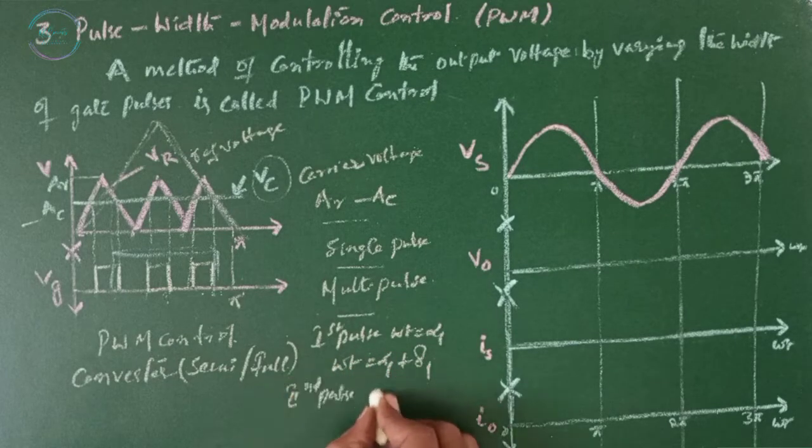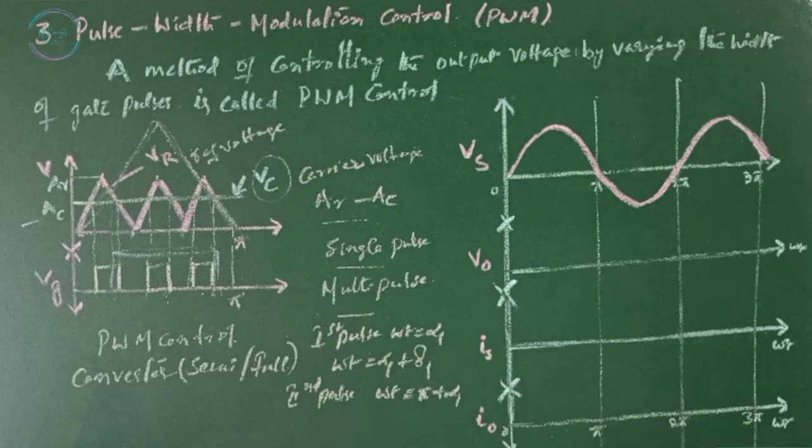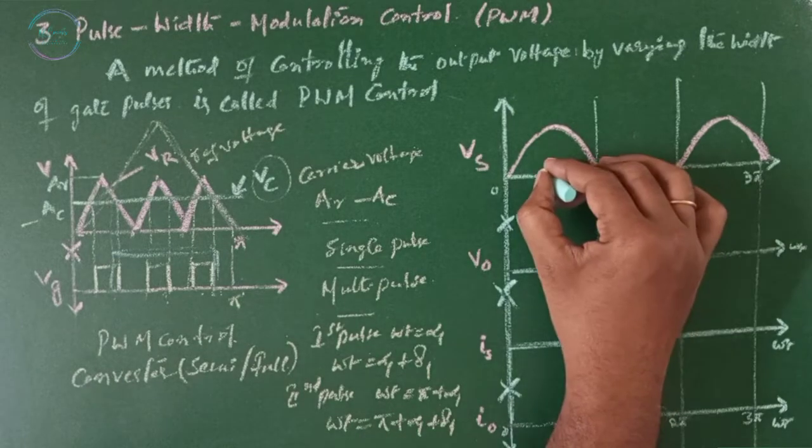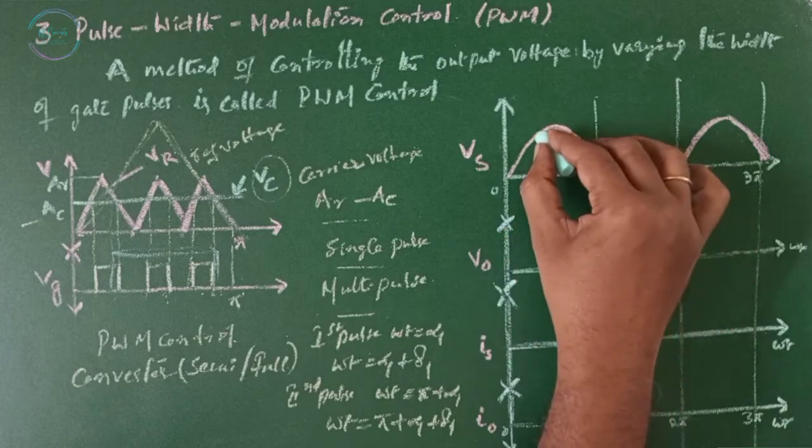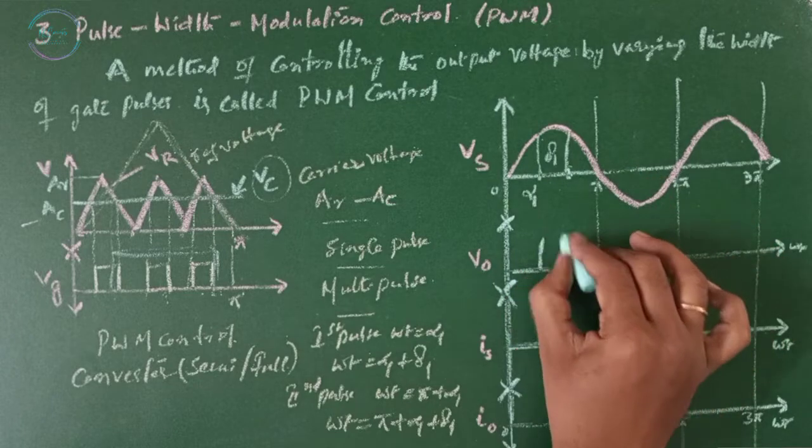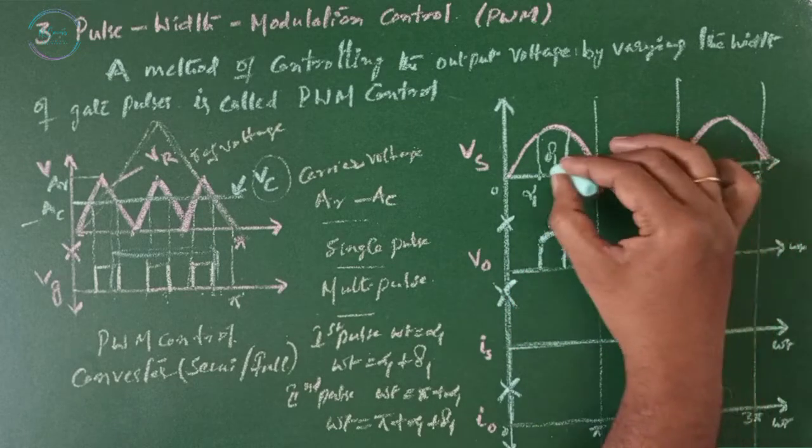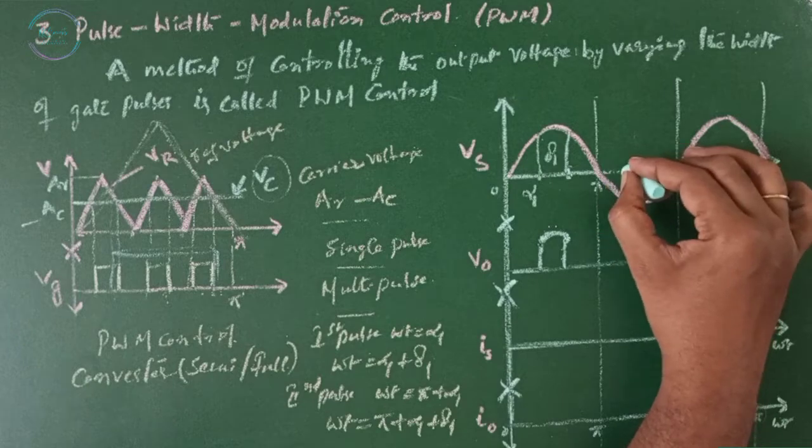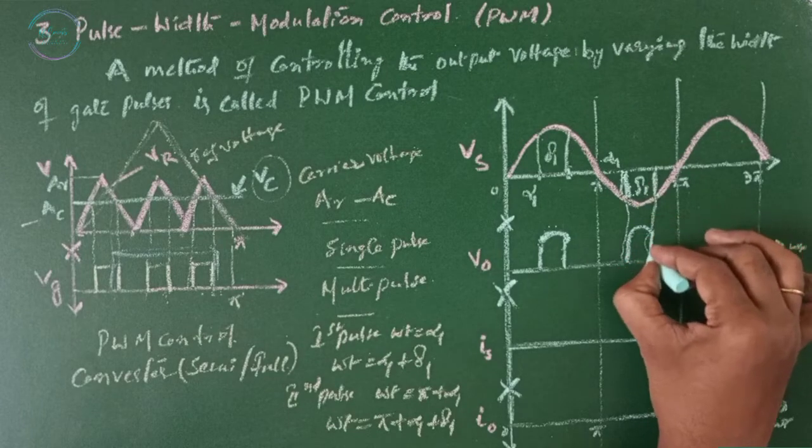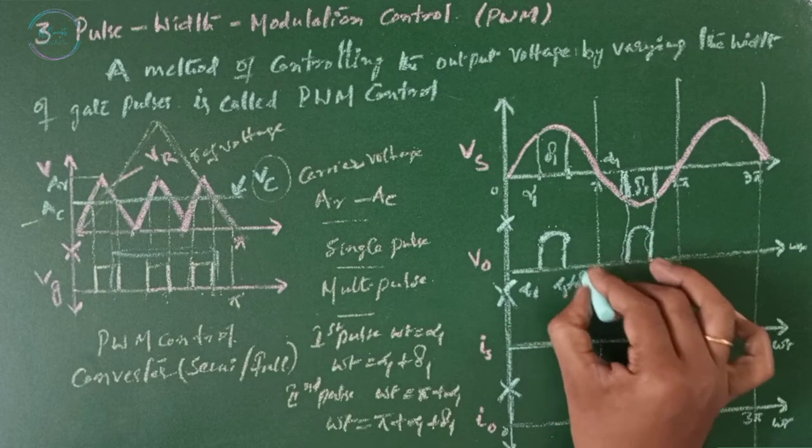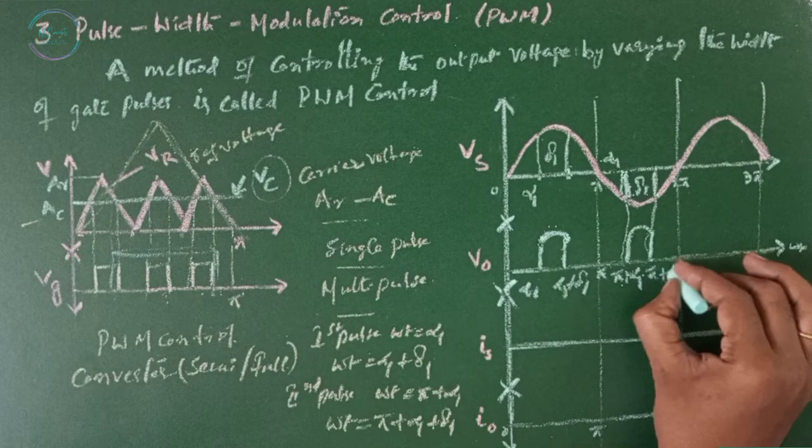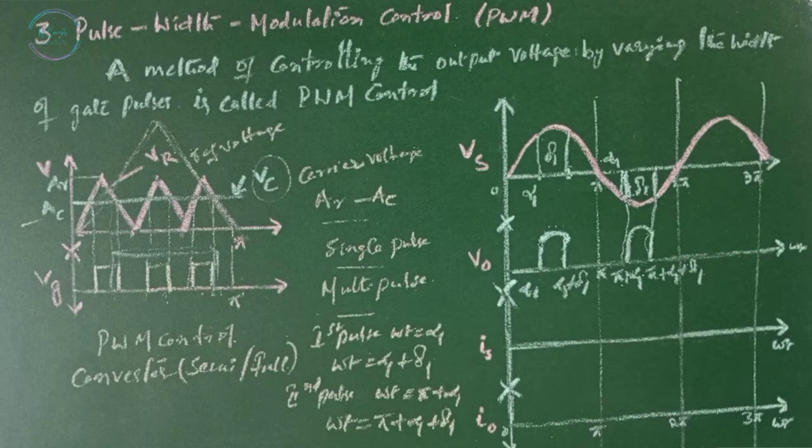Second pulse start set omega t equals to pi plus alpha 1 and the end set omega t equals to pi plus alpha 1 delta 1. If you considered alpha here, this is alpha 1. Then from here to here, let this be delta 1. This will be our output, single pulse. Similarly, the next pulse is going to act after pi plus alpha, alpha 1 to delta 1. So alpha 1, this is alpha 1 plus delta 1, this is pi. So pi plus alpha 1, this is pi plus alpha 1 delta 1. Here we considered a single pulse.